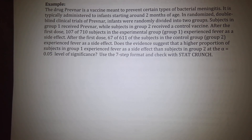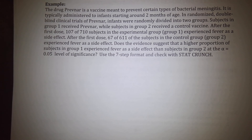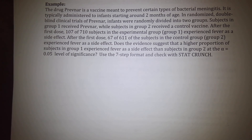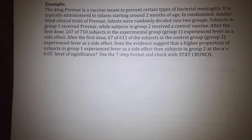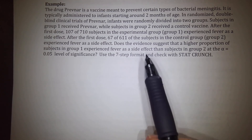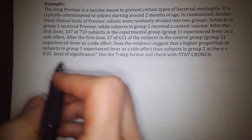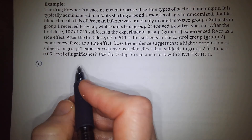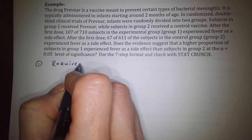In this example we have the drug Prevnar, a vaccine meant to prevent certain types of bacterial meningitis, typically administered to infants starting around two months of age. In randomized double-blind clinical trials of Prevnar, infants were randomly divided into two groups. Subjects in group 1 received Prevnar; subjects in group 2 received a control vaccine. After the first dose, 107 of the 710 subjects in the experimental group experienced a fever, and 67 of the 611 subjects in the control group experienced a fever.